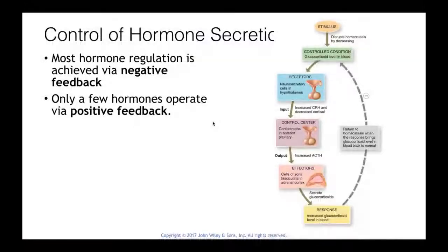Let's talk about homeostasis in this short video. Homeostasis is this dynamic state of change — it's keeping the seesaw tilting one way and then finding a way to bring it back the other way. We have these two feedback loops: negative feedback loops and positive feedback loops.